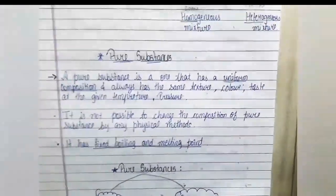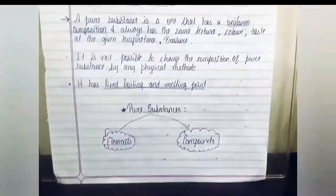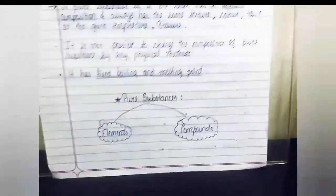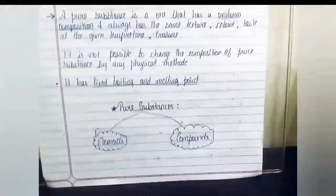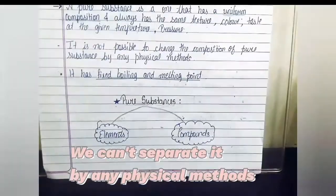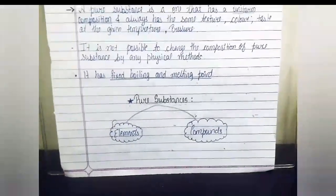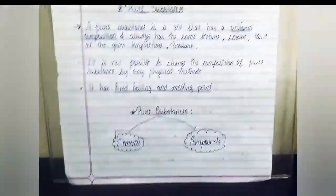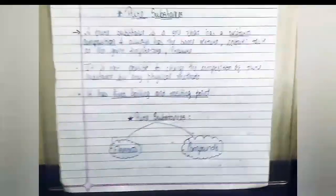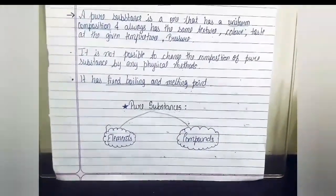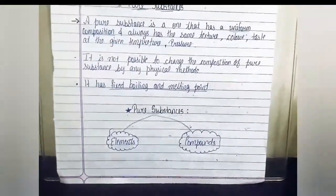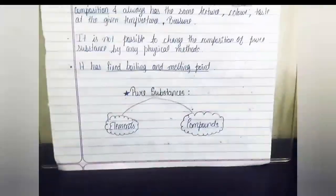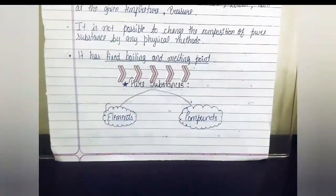It is not possible to change the composition of pure substance by any physical method. We cannot separate any pure substance by physical methods such as filtration or sublimation. Pure substance also has a fixed boiling point and melting point — this is a very important point to remember.